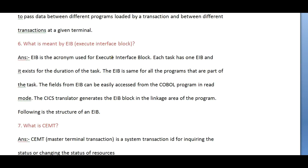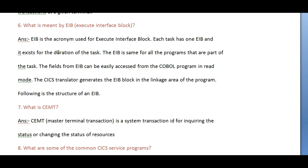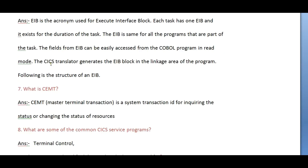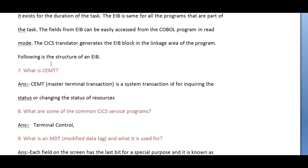What is meant by EIB, Execute Interface Block? EIB is the acronym for Execute Interface Block. Each task has an EIB and it exists for the duration of the task. The EIB is the same for all programs that are part of the task. The fields from EIB can be easily accessed from a COBOL program in read mode. The CICS translator generates the EIB block in the linkage area of the program.